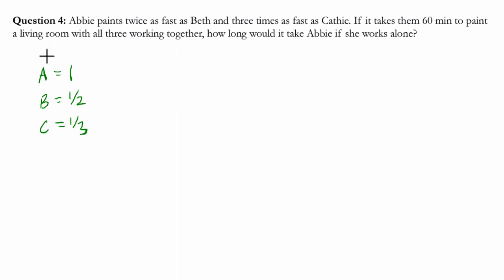So these are the amounts that they could paint, these are essentially their rates. So the first thing we identify is their rate.